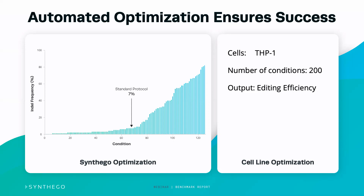For example, if we had pulled out the standard protocol available online for THP1 cells, we would have only achieved a 7% editing efficiency — which really isn't good enough. With this automated approach, we're able to increase that editing efficiency and find a protocol that gives us over 80% editing efficiency in these relatively hard-to-transfect cells. The whole timeline for this is about three days, and most of that time is actually just waiting for sequencing to come back.